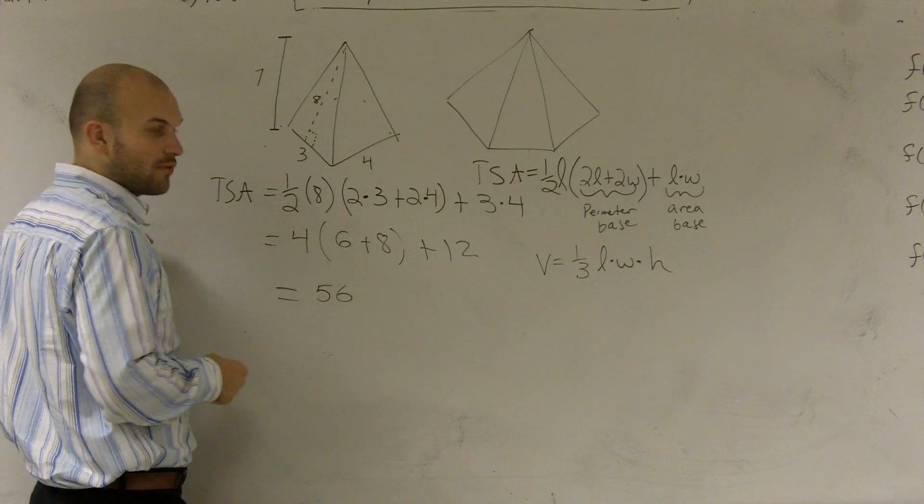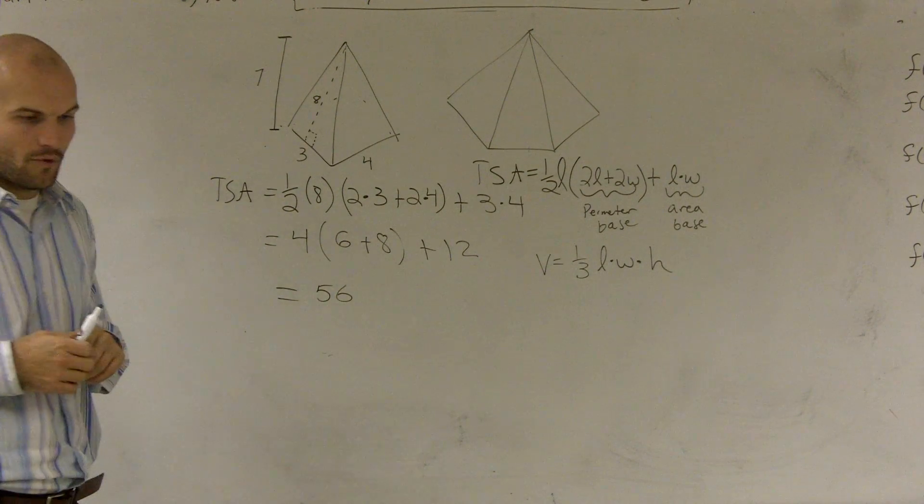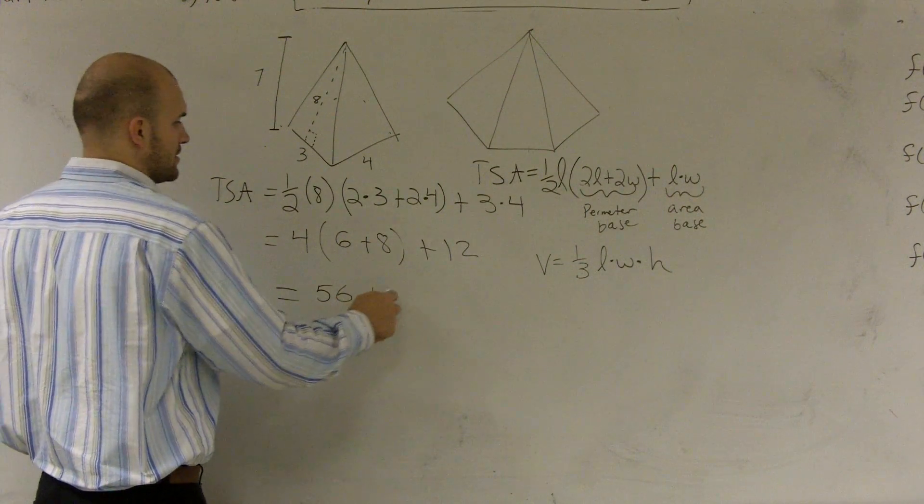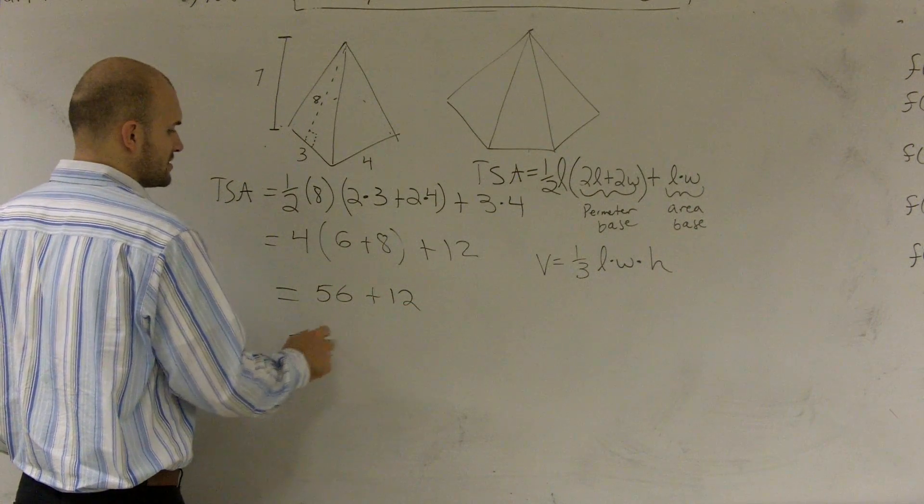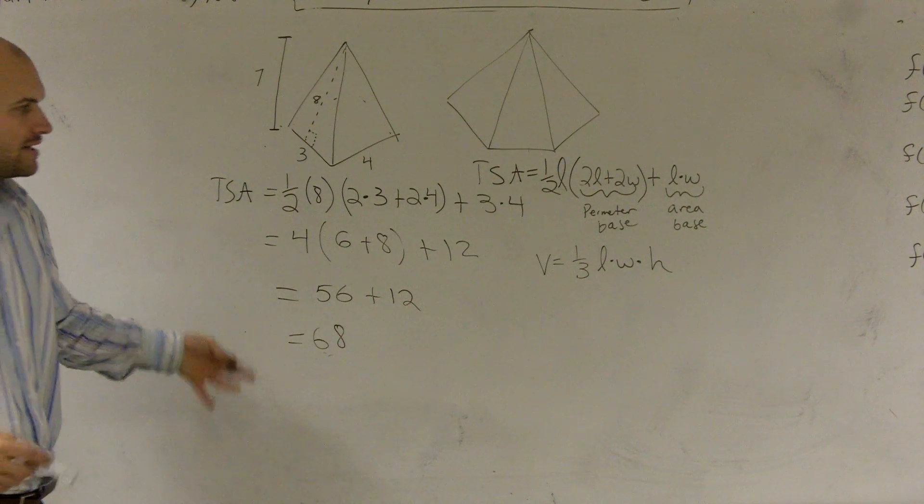This becomes 14, which is going to become 56. Well, 6 plus 8 is 14. Times 4 is going to become 56, plus 12, which equals 68. So that's going to be my total surface area.